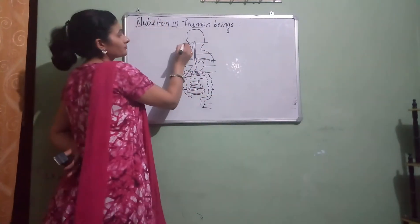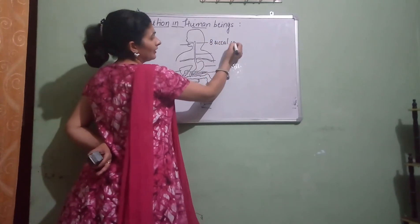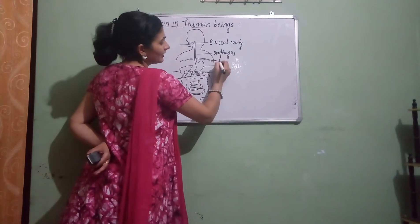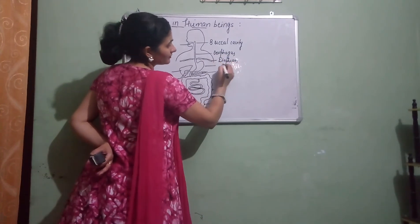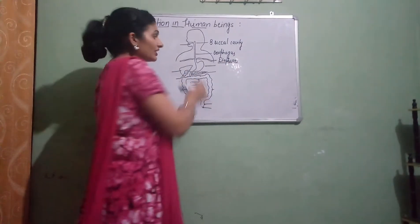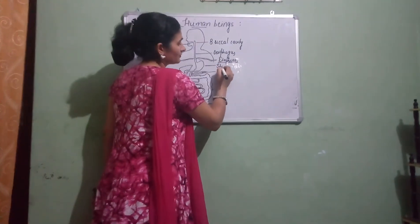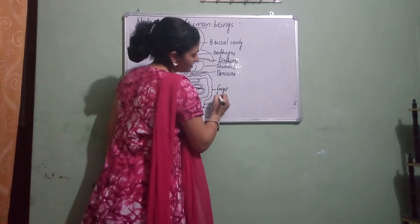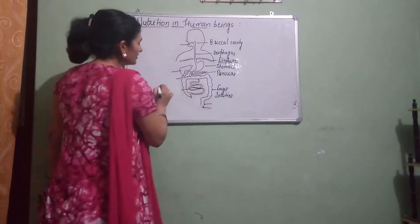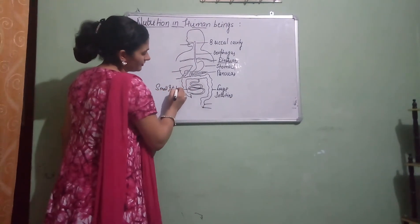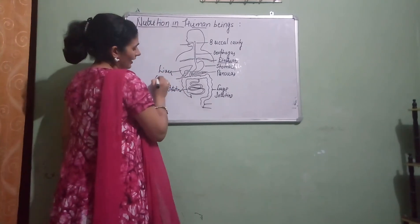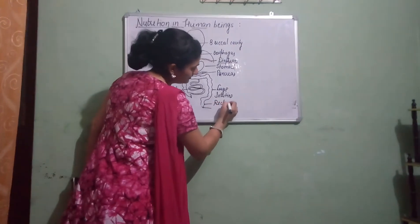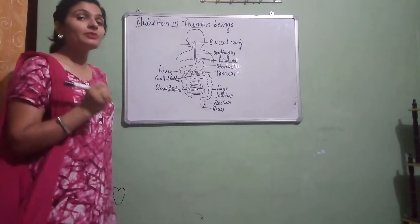In it, first of all, it is the buccal cavity. Then it is the esophagus. It is the diaphragm — the muscular lining which separates the thoracic cavity from the abdominal cavity. Next is the stomach. It is the pancreas. It is the large intestine. It is the small intestine. And it is the liver and gallbladder.